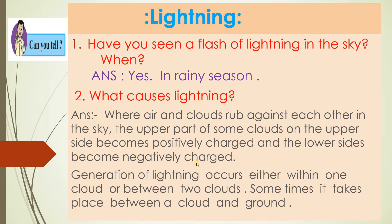Question number 2: What causes lightning? Where air and clouds rub against each other in the sky, the upper part of some clouds becomes positively charged and the lower sides become negatively charged. Generation of lightning occurs either within one cloud or between two clouds. Sometimes it takes place between clouds and the ground. This is a flash of lightning.